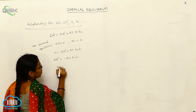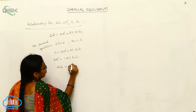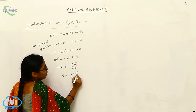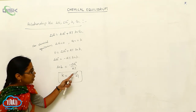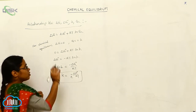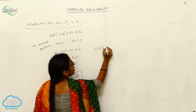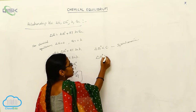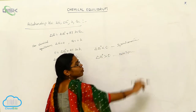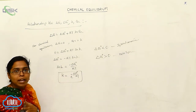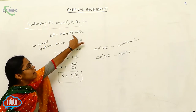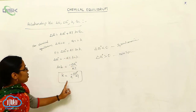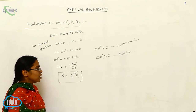From this, log K equals minus delta G naught divided by RT, so K is equal to e to the power of minus delta G naught by RT. This is the relationship between the equilibrium constant and the standard Gibbs energy. Whenever delta G naught is less than 0 (negative value), it indicates a spontaneous reaction. Whenever delta G naught is greater than 0, it is called a non-spontaneous reaction.